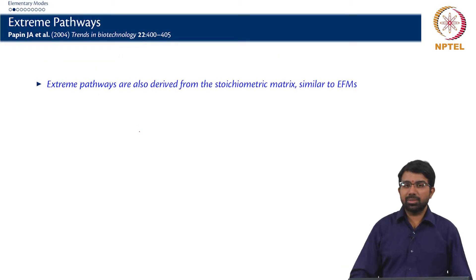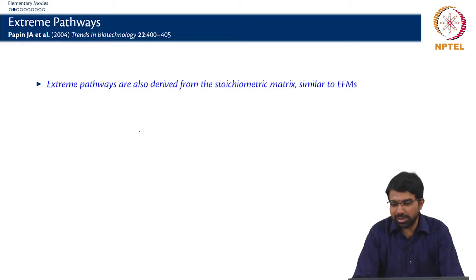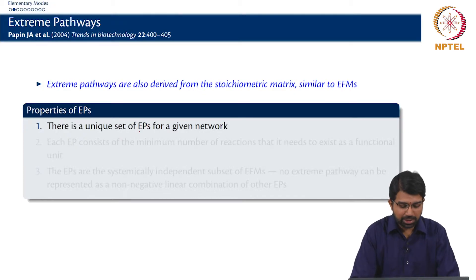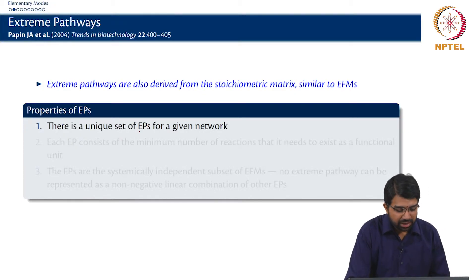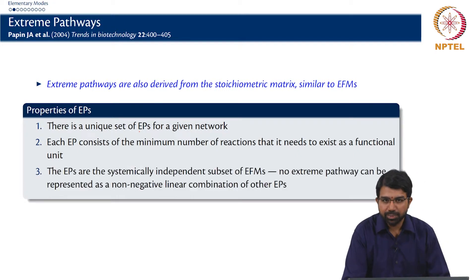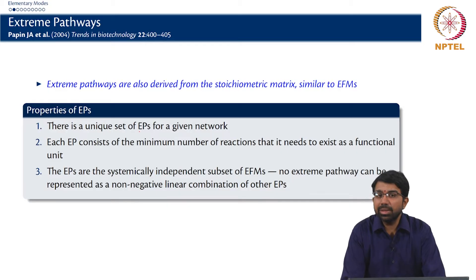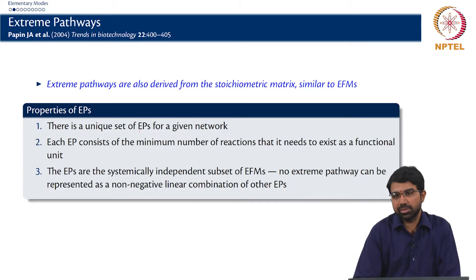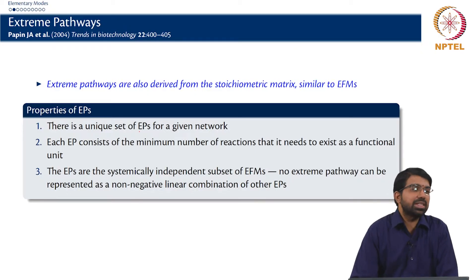There is also this other concept of extreme pathways. This is mathematically easier to understand in some sense. They are derived from the stoichiometric matrix, similar to EFMs, and there is a unique set of extreme pathways for a given network. Each extreme pathway again consists of the minimum number of reactions it needs to exist as a functional unit, and they are the systematically independent subset of EFMs. No extreme pathway can be represented as a non-negative linear combination of the other EFMs — so these are basically basis vectors of the flux space.